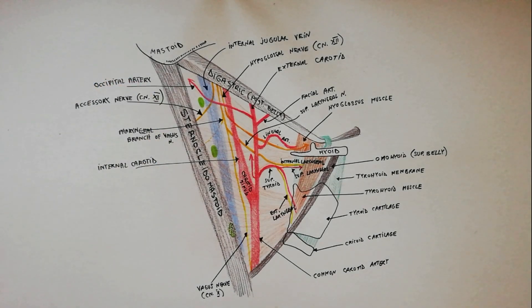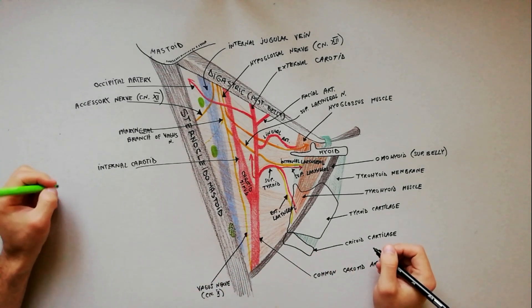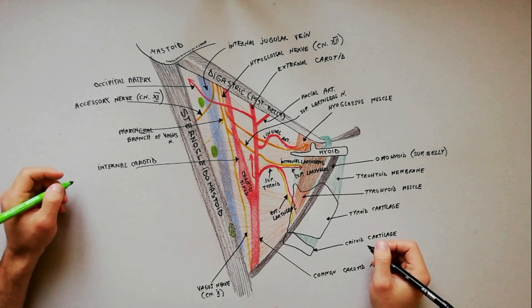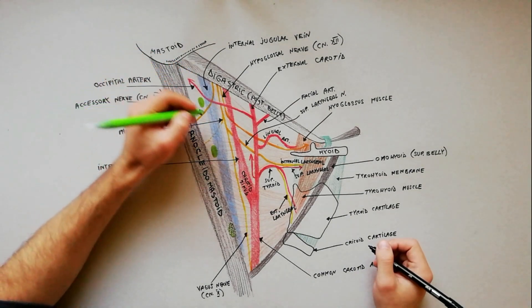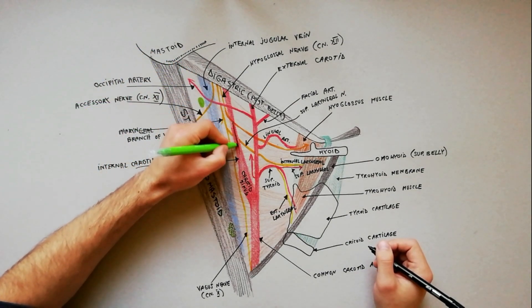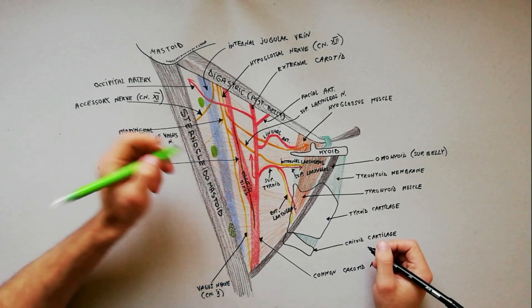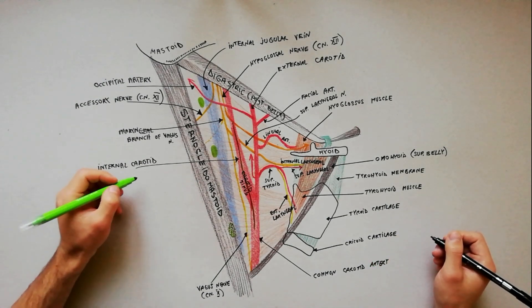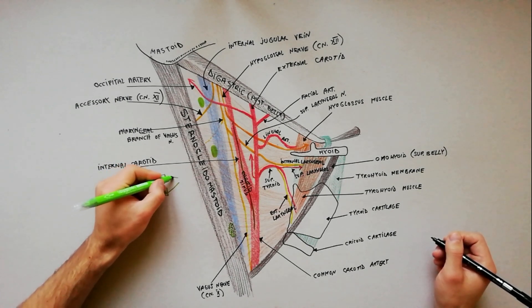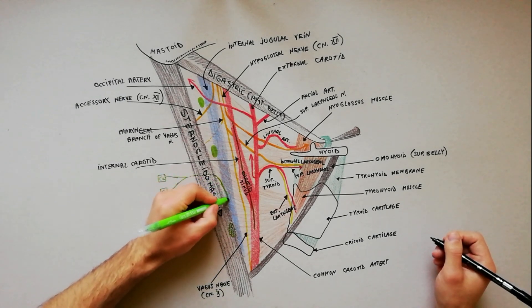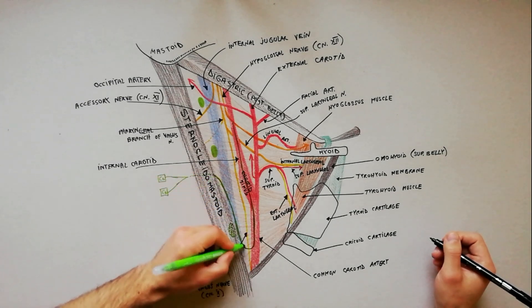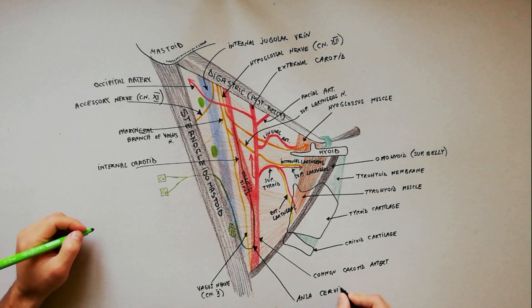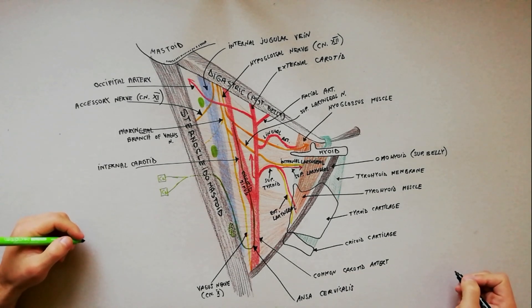Another nervous structure present in this region is the ansa cervicalis, which is a loop of nerves that are part of the cervical plexus. Ansa cervicalis has two roots. The superior root, also called descendens hypoglossi, is formed by the descending branch of the hypoglossal nerve carrying C1 spinal nerve fibers, and descends over the internal and common carotid arteries. The inferior root, also called descendens cervicalis, is derived from C2 and C3 spinal nerves. As this root descends, it first winds round the internal jugular vein and then continues anteroinferiorly to join the superior root in front of the common carotid artery at the level of the cricoid cartilage.